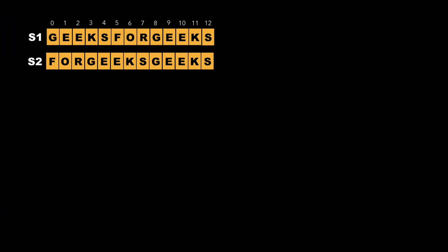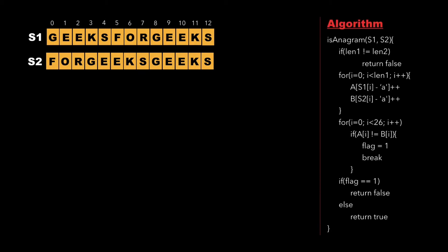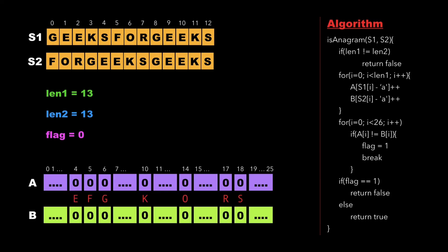Now let's look at the approach to solve this problem. Consider two strings s1 and s2. The algorithm contains a function 'isAnagram' whose arguments are strings s1 and s2. We declare variables length1 and length2 for the lengths of s1 and s2, and initialize a variable flag to 0. We also create two integer arrays A and B of size 26, which store the frequency count of characters from s1 and s2 respectively.